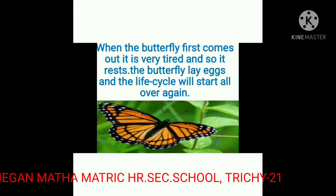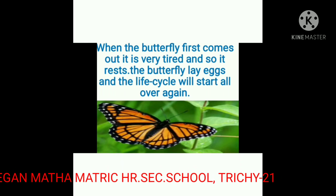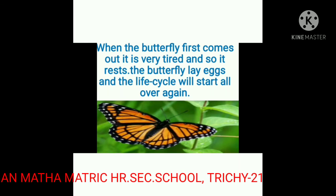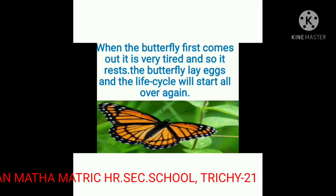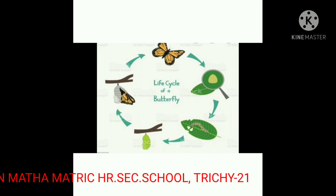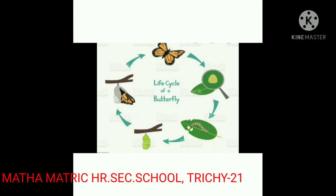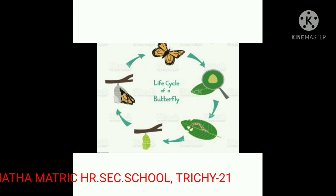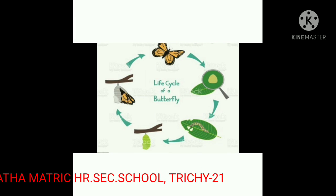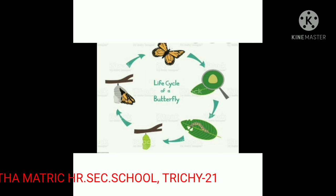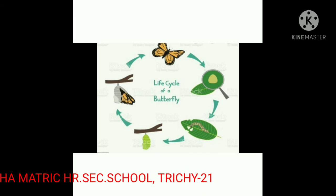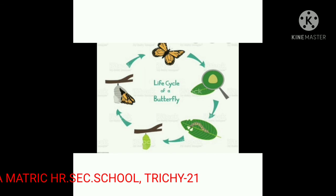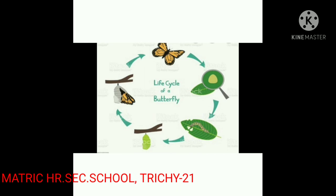These are the four stages of the life cycle of a butterfly. The first one: egg. The second one: caterpillar or larva. The third one: pupa or chrysalis. The fourth stage: butterfly or adult.